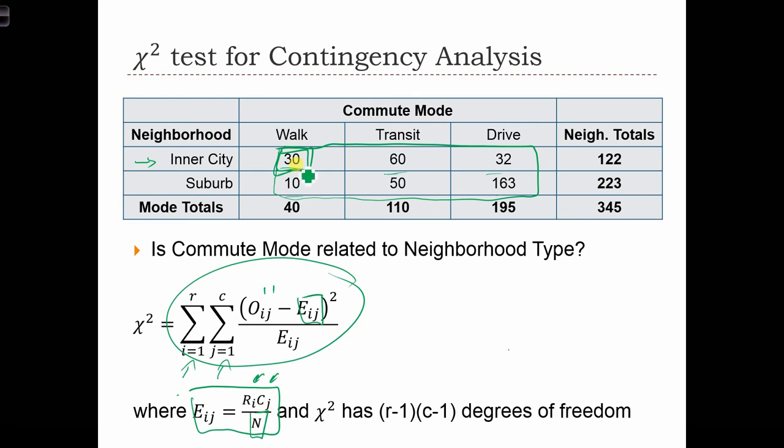This is the expected frequency of a cell under the null hypothesis that the two variables are independent.